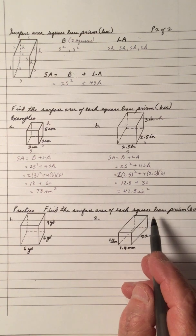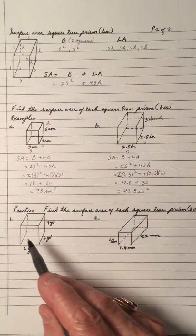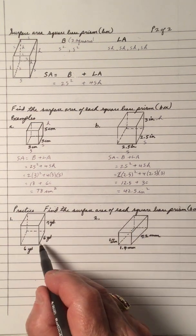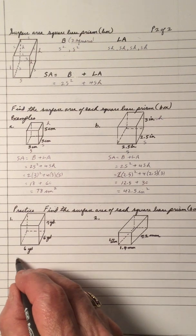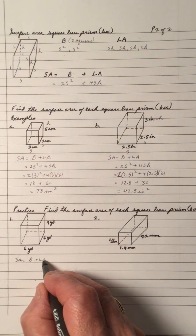And practice. Practice means you pause the video and work out each of these. Do one at a time. We want the surface area of the square base box.